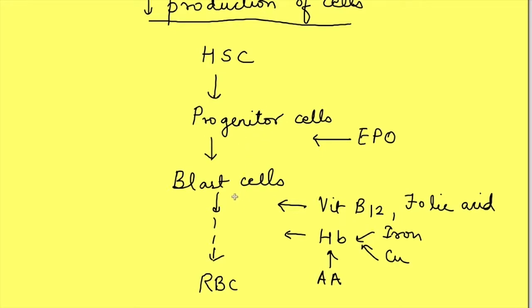Then it becomes further committed and this shows that blast cells becoming mature into RBCs. Each stage requires either growth factors or there are certain raw materials required for the process to continue efficiently. So this production of cells can be affected at any of these stages.